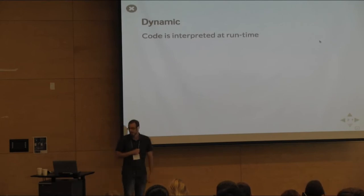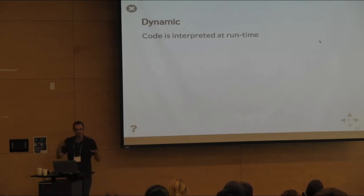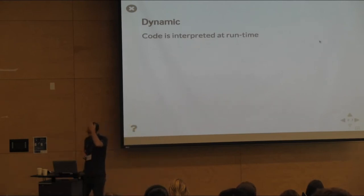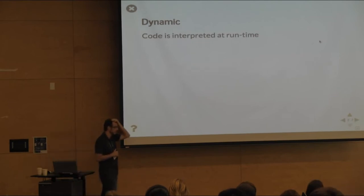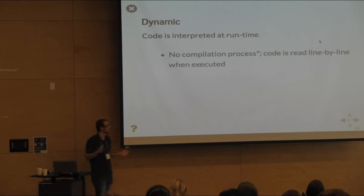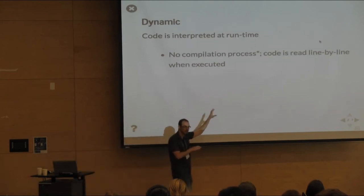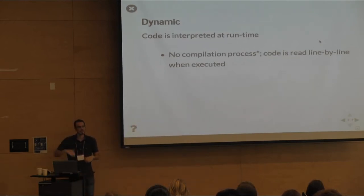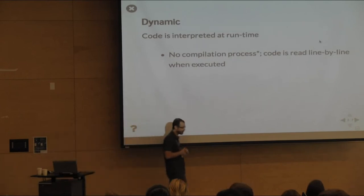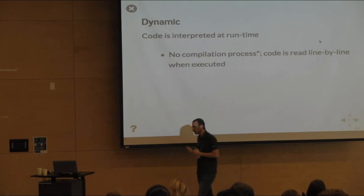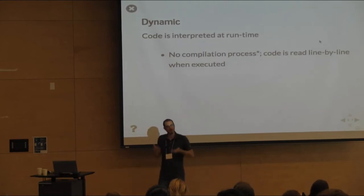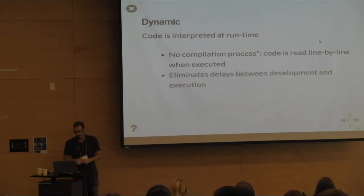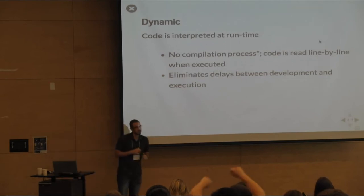Python is a dynamic language. Dynamic implies the code is interpreted at runtime — you don't write code and then sit through a compilation process. The general idea is that code is read line by line when it's executed. If you've programmed in C or Java, you know you have to recompile your code every time you make a change. That does not happen in Python — you run the thing and it starts going line by line, eliminating the delay between development and execution.